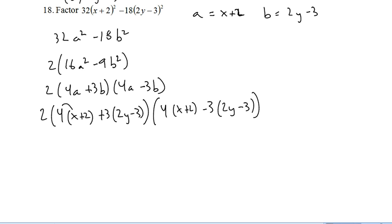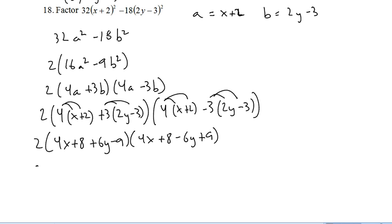Now I need to multiply all of these guys in. And just clean them up. 8 and negative 9 is negative 1, and 8 plus 9 is 17. There we go. That's fully factored. I can't break that into any more things multiplied together.